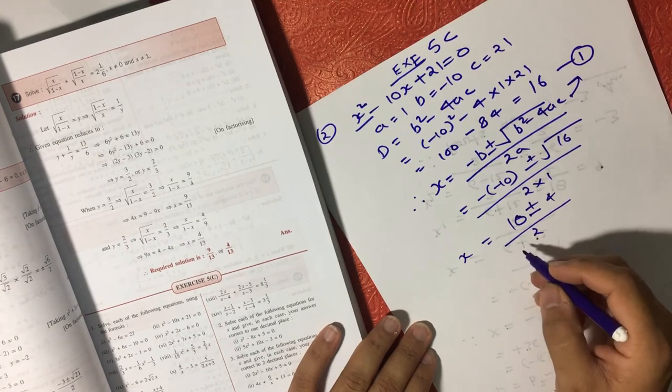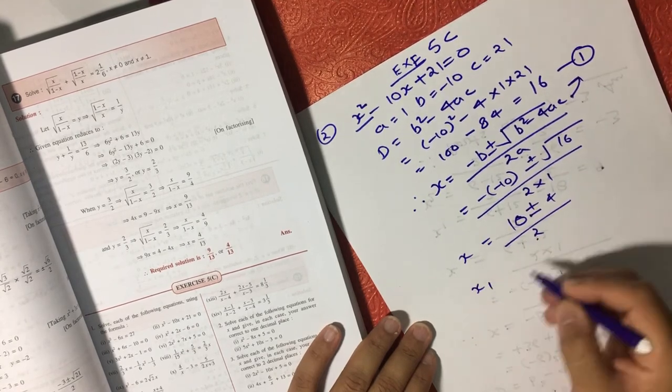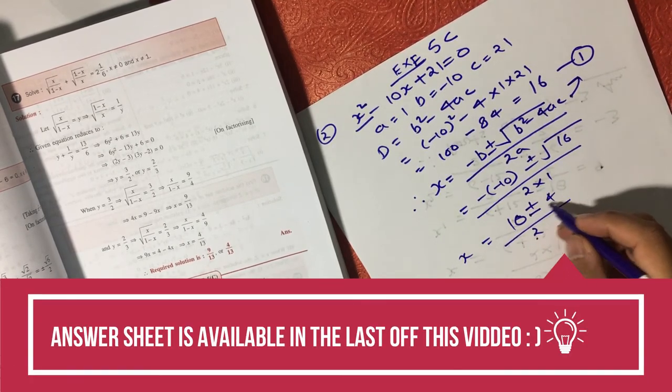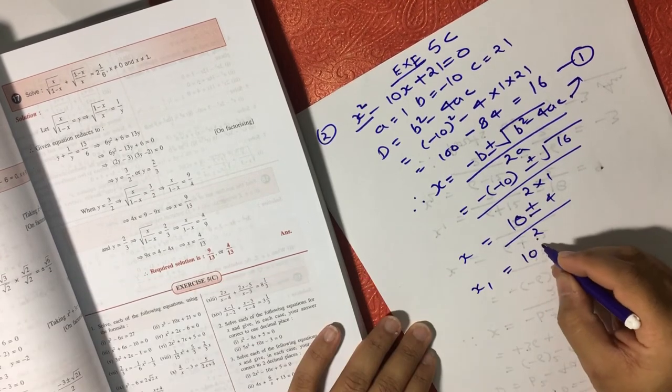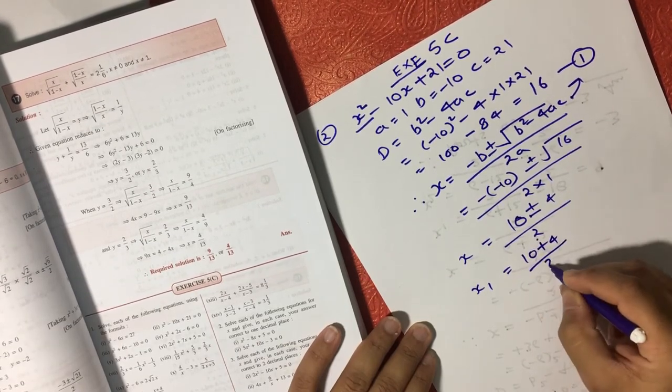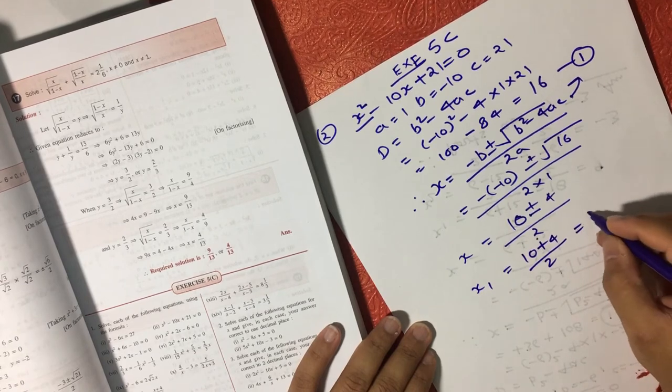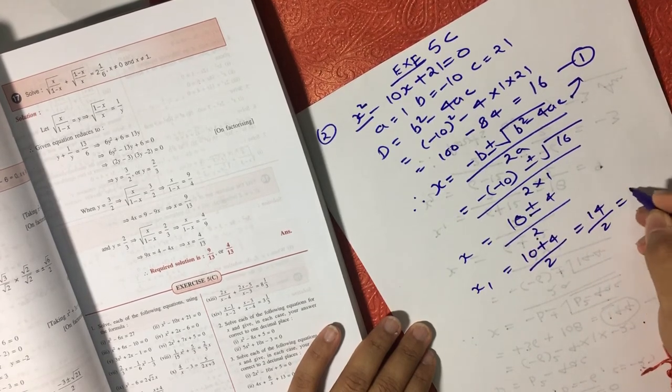That will become (10 + 4) / 2 = 14 / 2 = 7. So one value comes as 7.